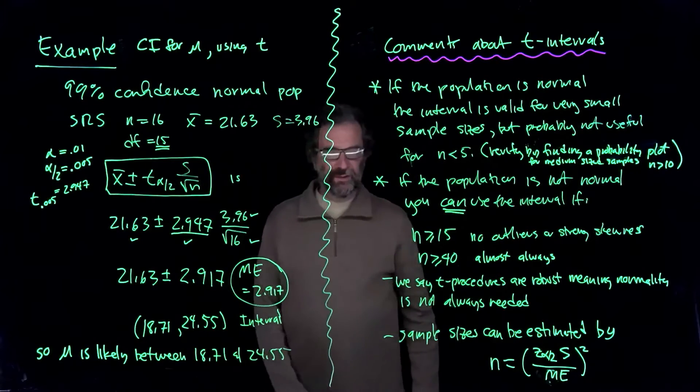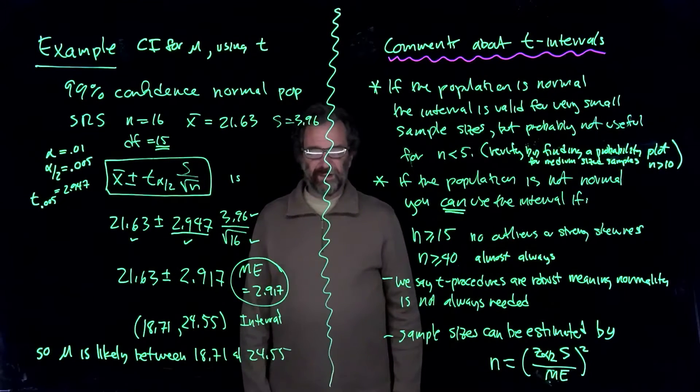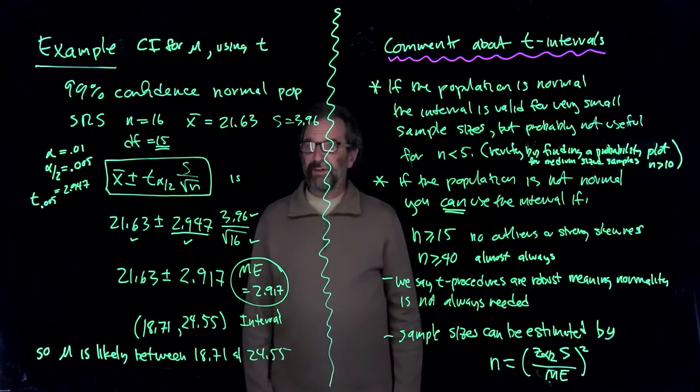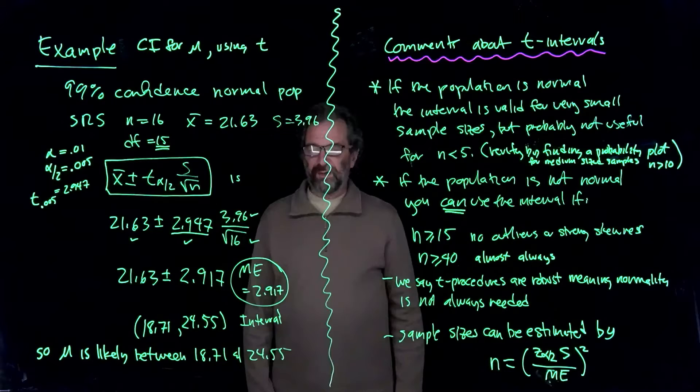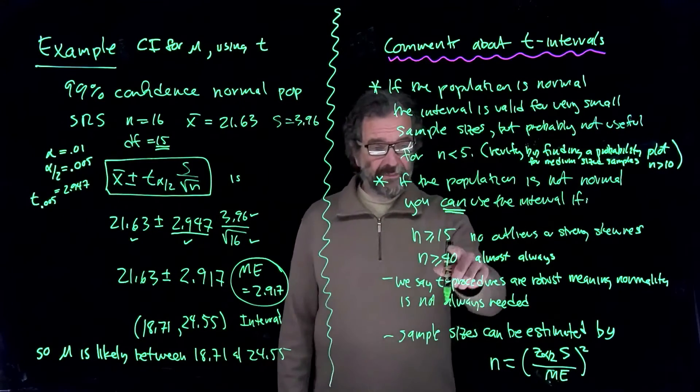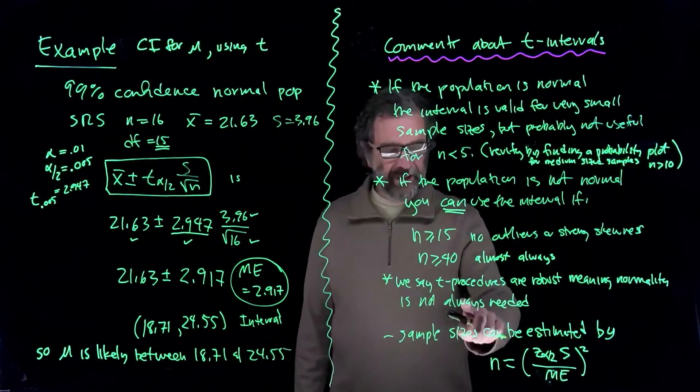So that would be the point of caution. See if it's reasonable to use the procedure by just looking at the plot of the data, a histogram, a stem plot, or something that can tell you the distribution of the sample you have and see if it looks reasonable for what you want to do. Because of this, we say T procedures are robust, meaning normality is not always needed.